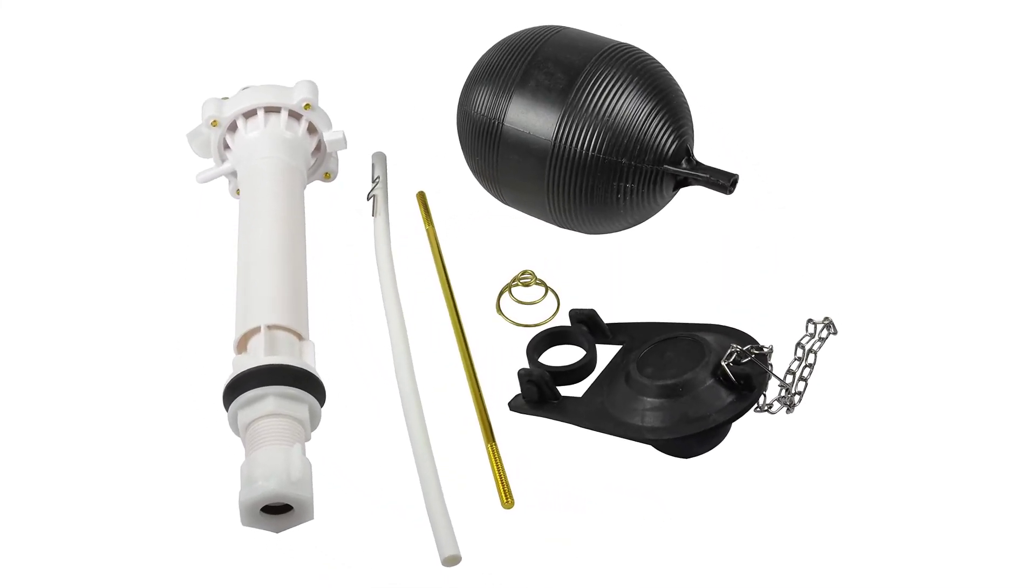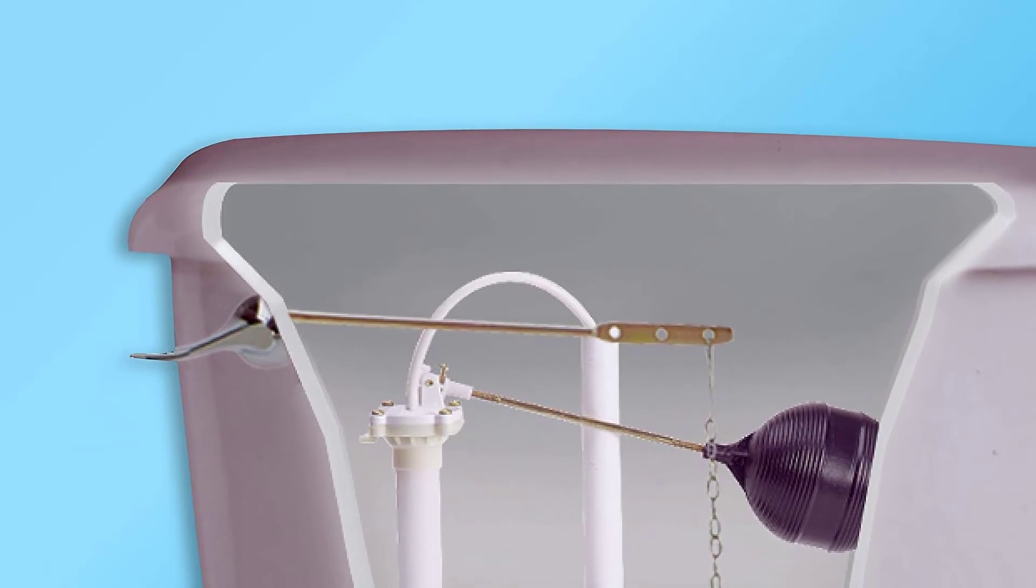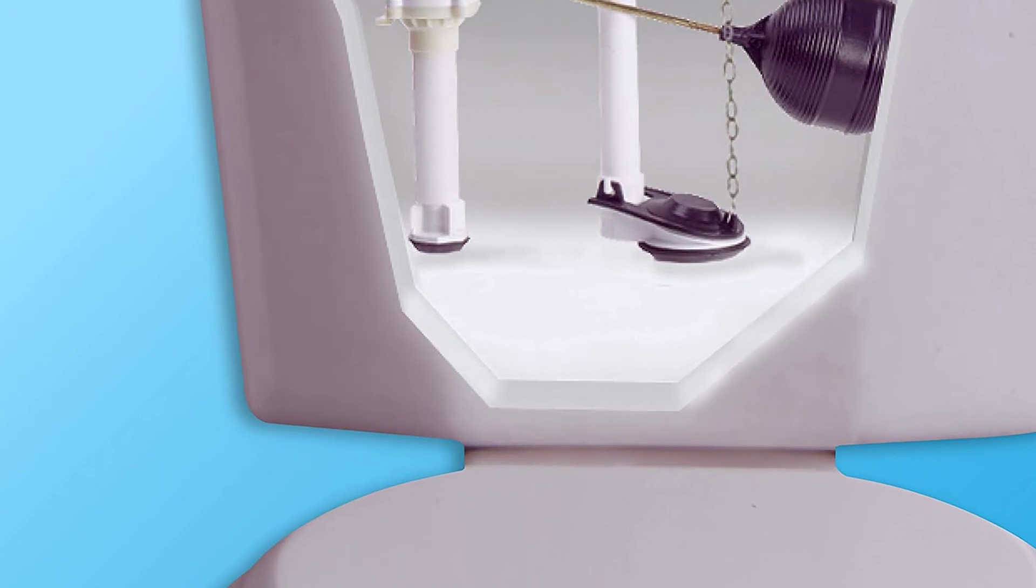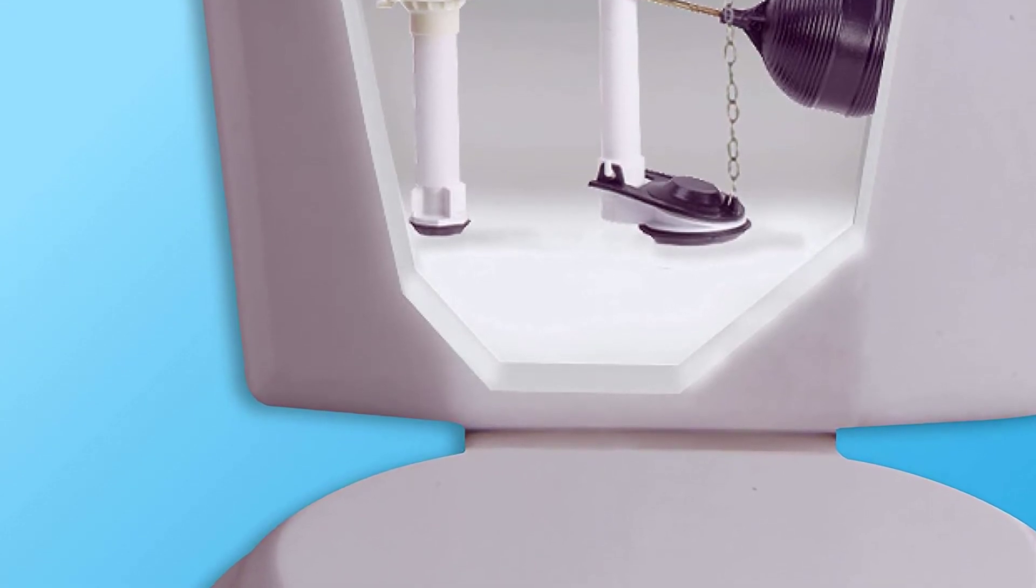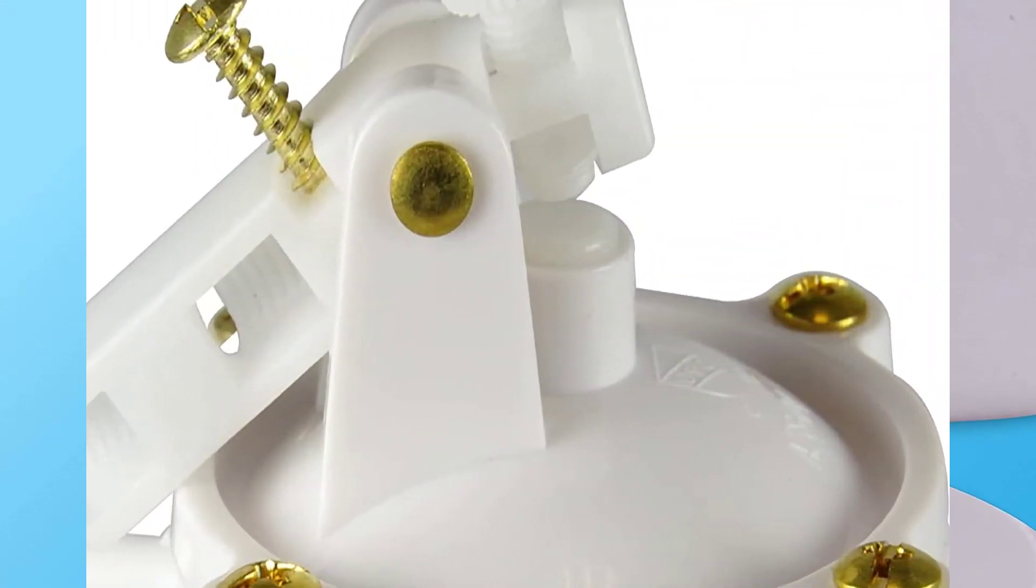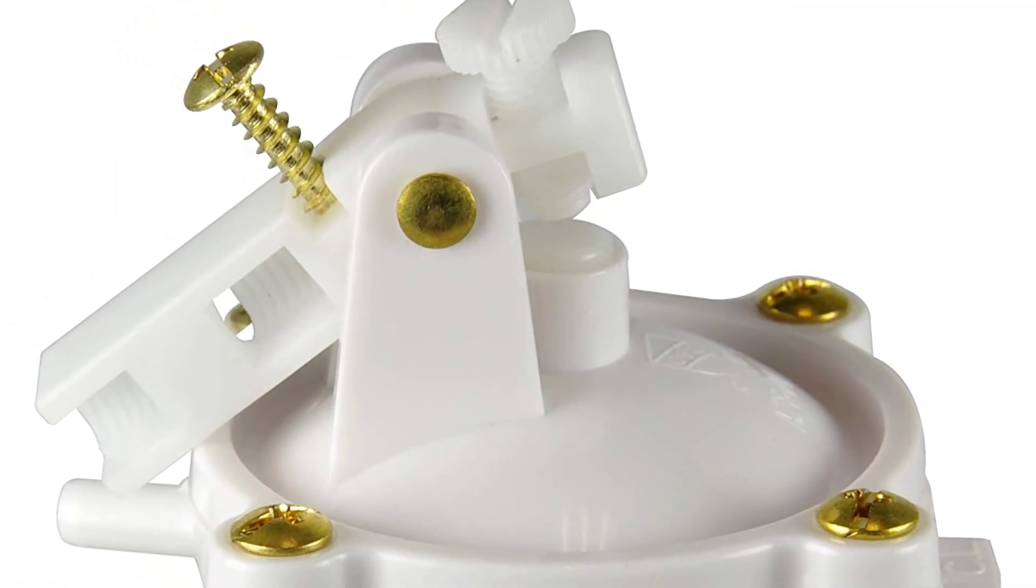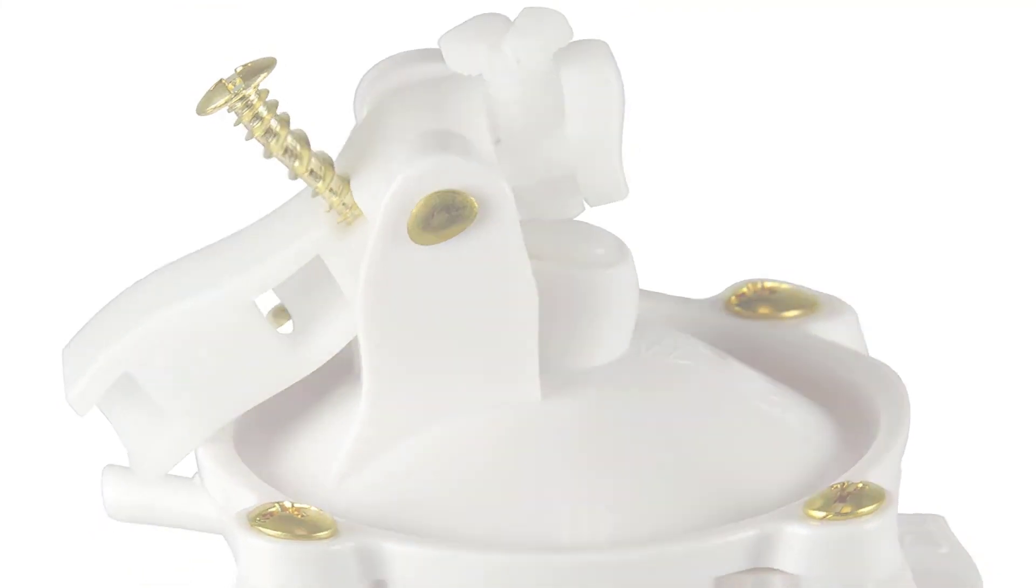The toilet flapper is ideal to replace worn out flappers and is designed to fit 2 inch toilet flush valves. Includes easy to follow installation instructions. Complete this DIY project with common household tools such as screwdrivers and adjustable wrench. Universal flapper with adapter, spring, float with rod, and ball cock with refill tube.